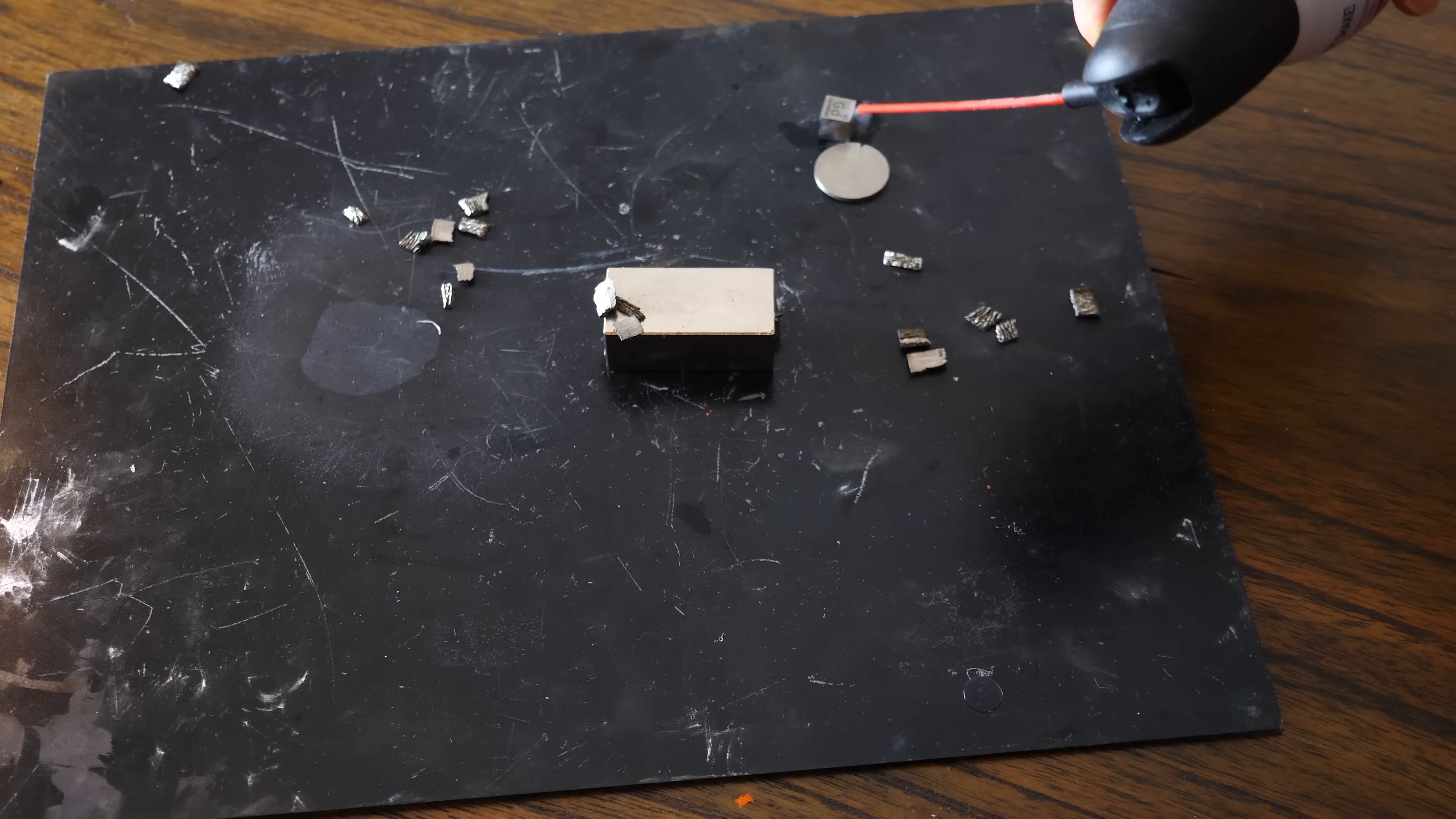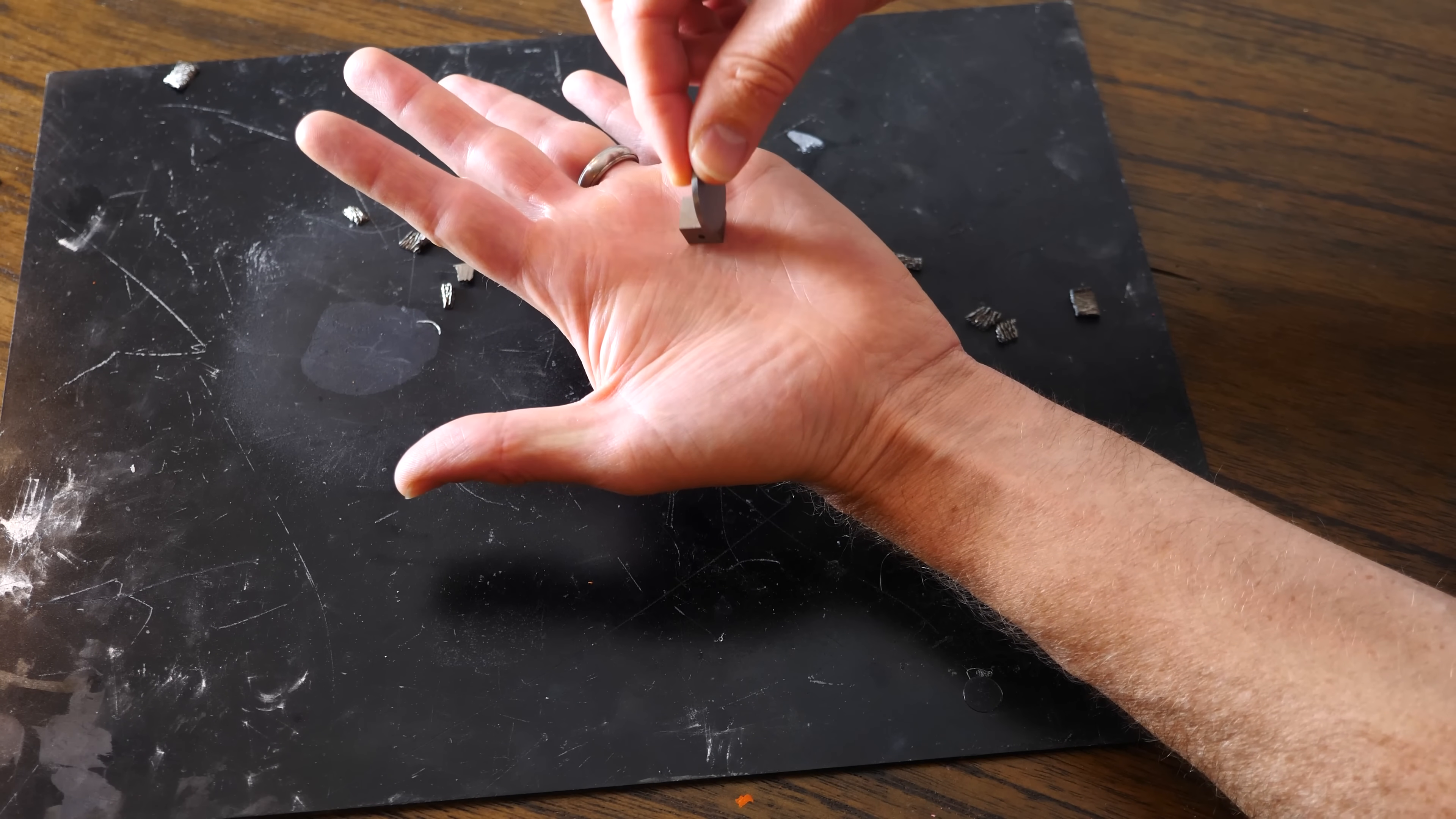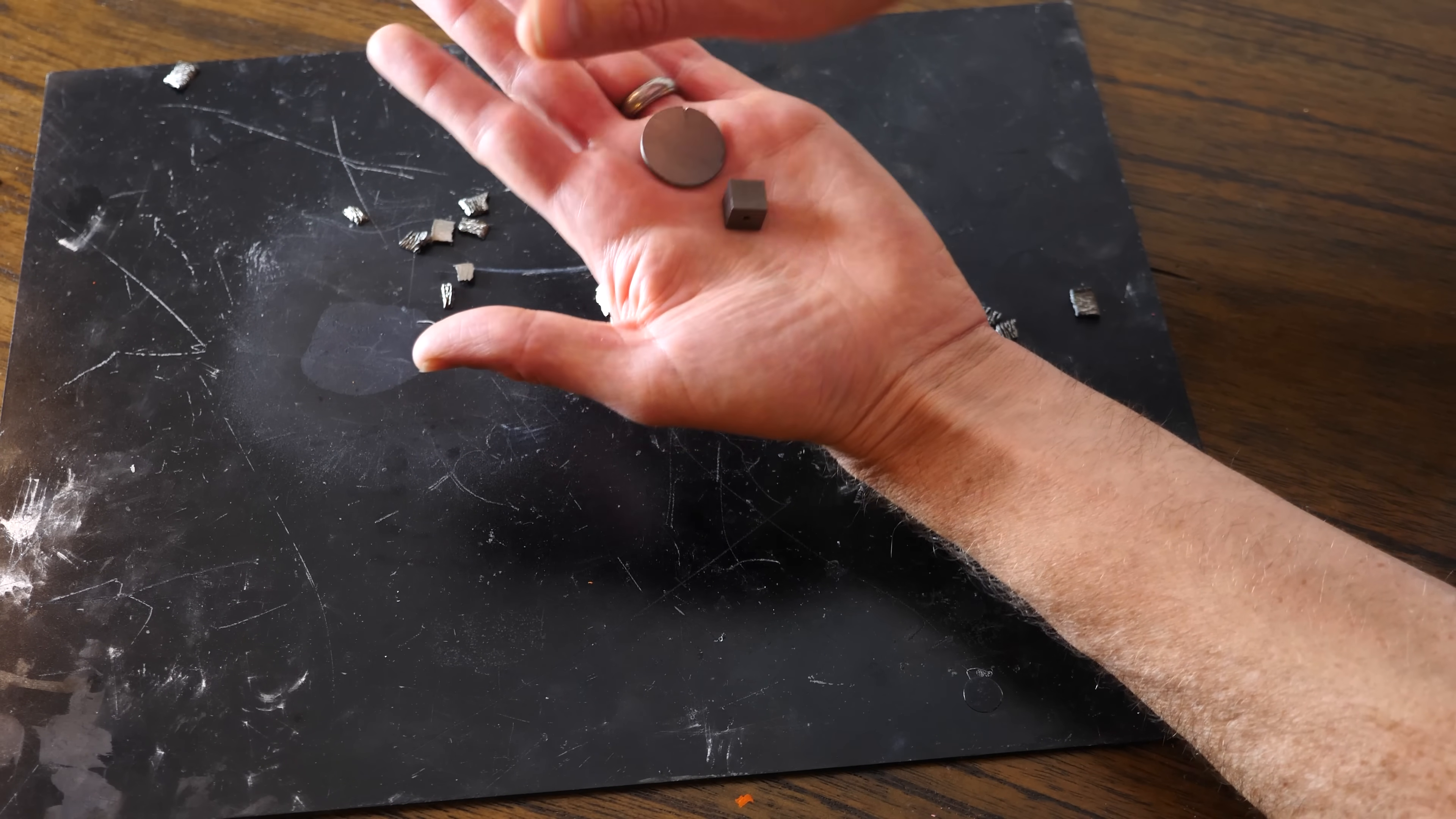But if I just cool it down a little bit, they'll stick together because they're now ferromagnetic. But when they warm up a little bit in my hand, they won't stick together anymore because they're now paramagnetic.